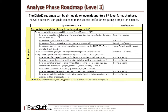Starting at the top level — level one — the question is: can you statistically validate what the root causes are, or what those inputs or Xs are that we would identify and validate for the transfer function? Within that, the first level two question is: do you know what the process capability is — also known as the voice of the process, or VOP? To answer that, we ask the level three sub-questions. First: have you assessed the statistical characteristics of your data, such as the mean, standard deviation, median, or mode? If not, use descriptive statistics to find those general characteristics.